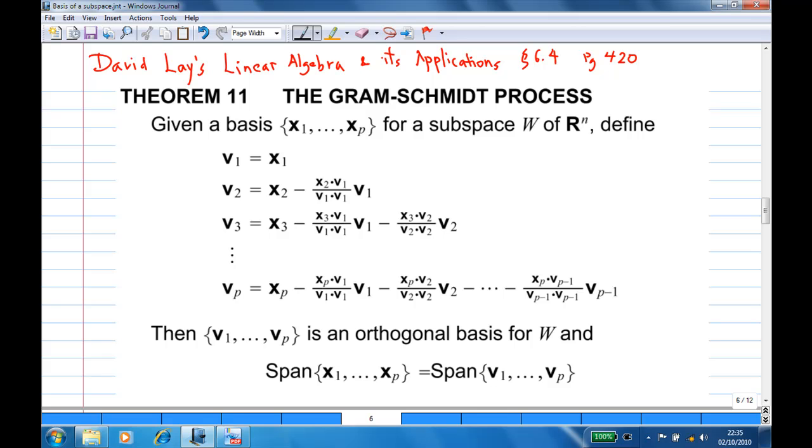Suppose that you have a basis x1 to xp for subspace W. We can define v1 equal to x1, v2 equal to x2 minus x2·v1 over v1·v1 times v1, and so on for v3 up to vp. Then we are going to get an orthogonal basis for W, and the span of x1 to xp is the same as the span of v1 to vp.